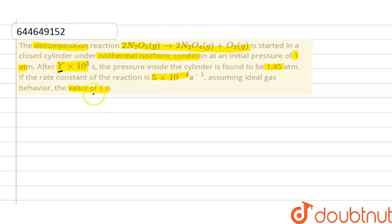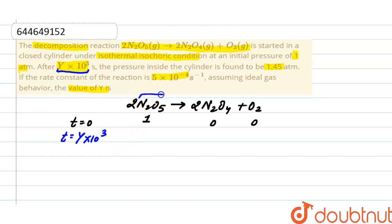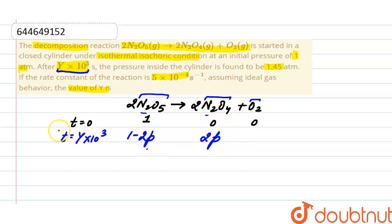The reaction here is 2N₂O₅ → 2N₂O₄ + O₂. Initially at t = 0, consider the pressure of N₂O₅ is 1 atmospheric and the pressure of N₂O₄ and O₂ is 0 atmospheric. At time t, which is y into 10 raised to the power 3 seconds, some of the pressure of N₂O₅ is reduced. The decrease in pressure is 1 minus 2p, where p is the reduced pressure. There are 2 N₂O₄ present, so the pressure of N₂O₄ is 2p.